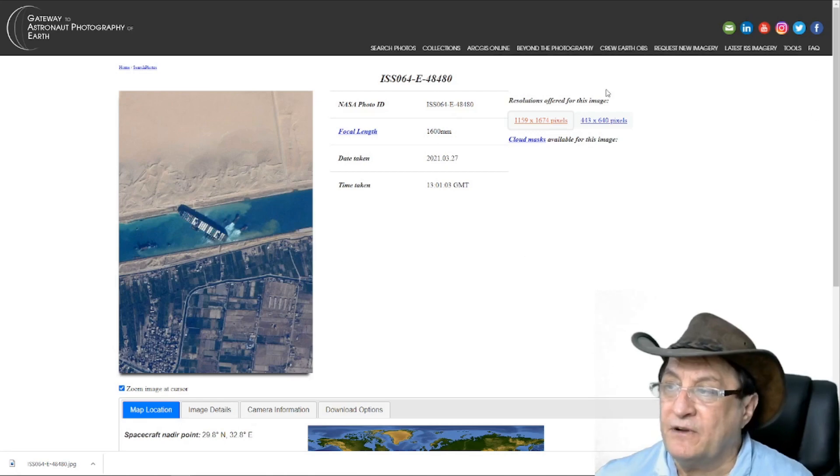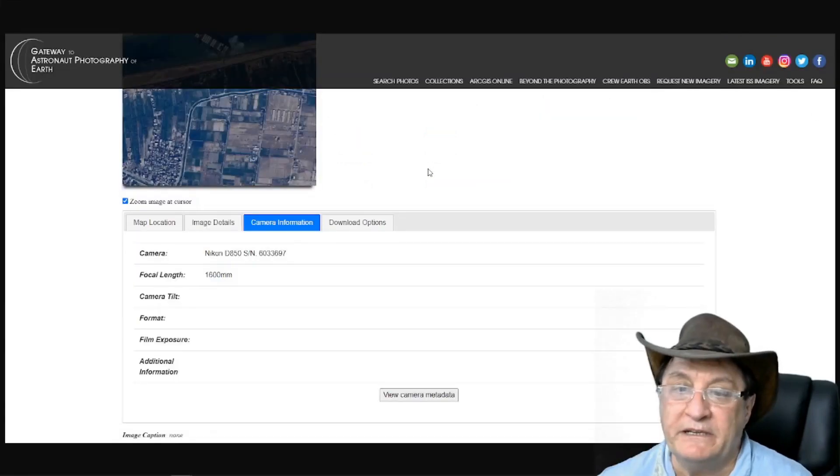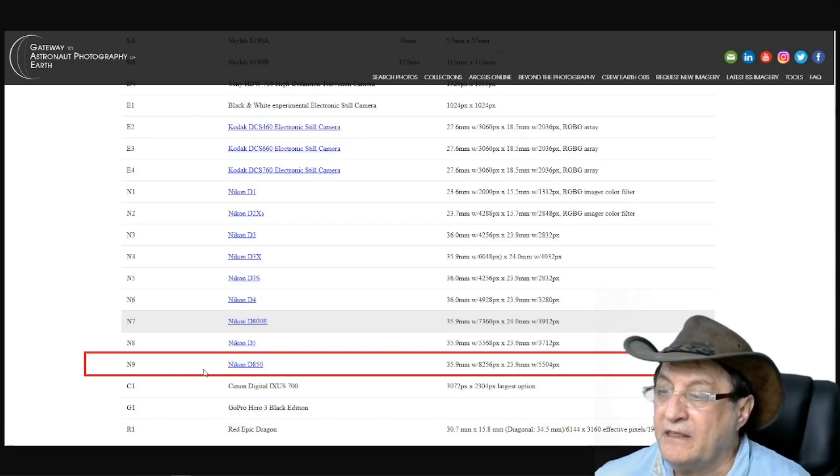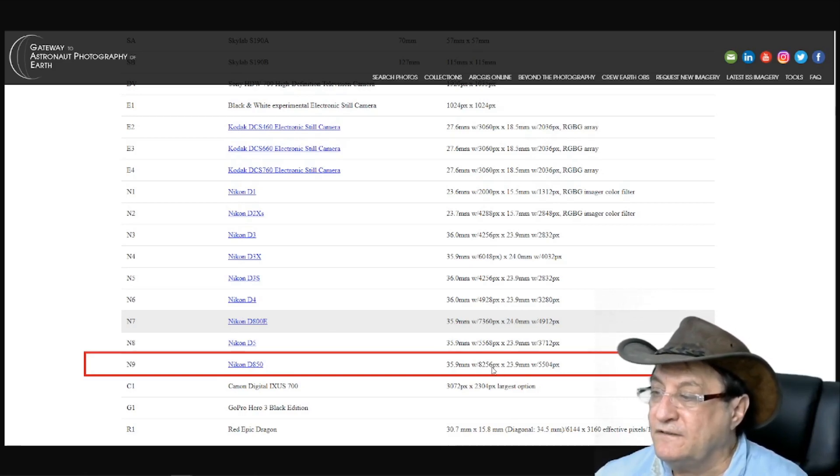Now you'll see here this focal length 1600mm on that one too. Now the camera for that photo was a Nikon D850. They're given the serial number and everything. And then this is another piece of information on all the cameras they use in the ISS. And in this one you can see that its resolution is 8256 pixels by 5504. That's a full size picture. And the sensor size is there 35.9mm by 23.9mm. So it's a 35mm camera.